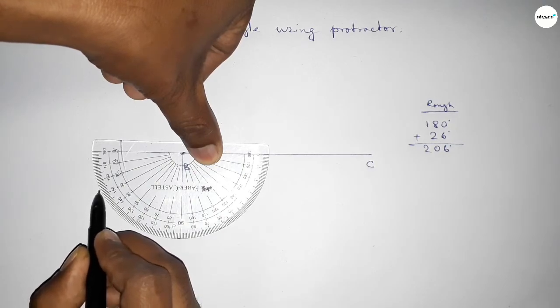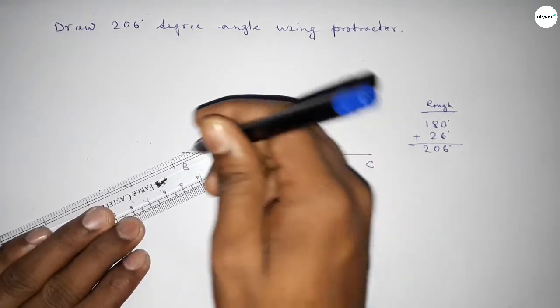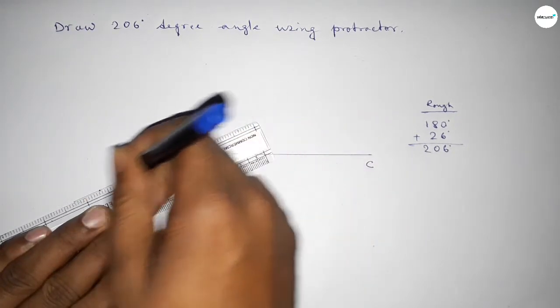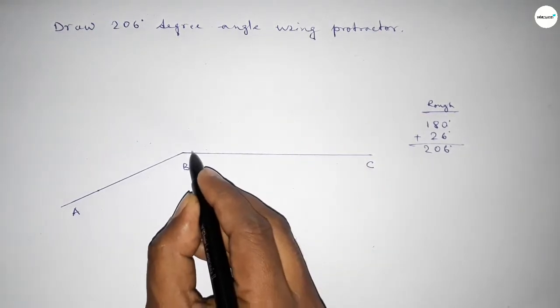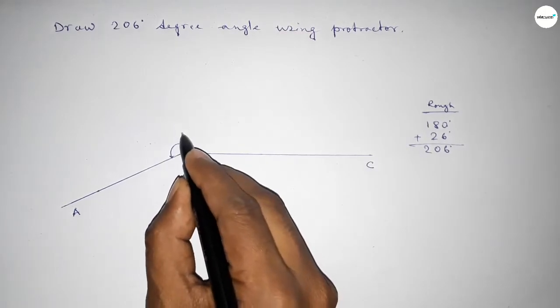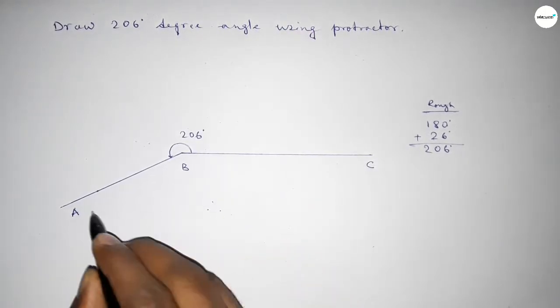Now we join this side and mark point A here. Angle ABC formed this way is 206 degrees. Therefore, angle ABC equals 206 degrees.